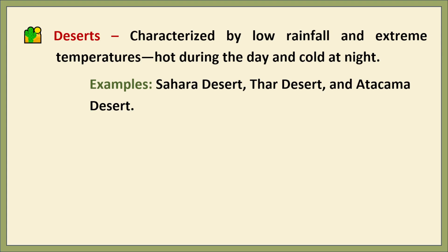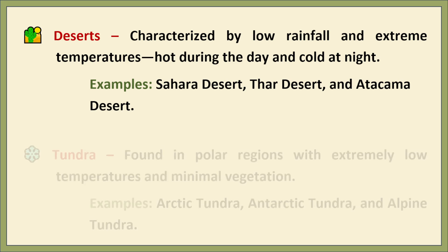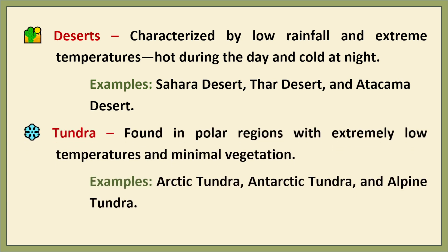Deserts are characterized by low rainfall and extreme temperatures — hot during the day and freezing at night. Despite harsh conditions, they are home to unique species like cactus, camel, and scorpion. Examples include the Sahara, Thar, and Atacama deserts. Tundra, found in polar regions, features freezing temperatures and minimal vegetation; animals like polar bears and arctic foxes have adapted to survive there. Examples include the Arctic, Antarctic, and alpine tundra.